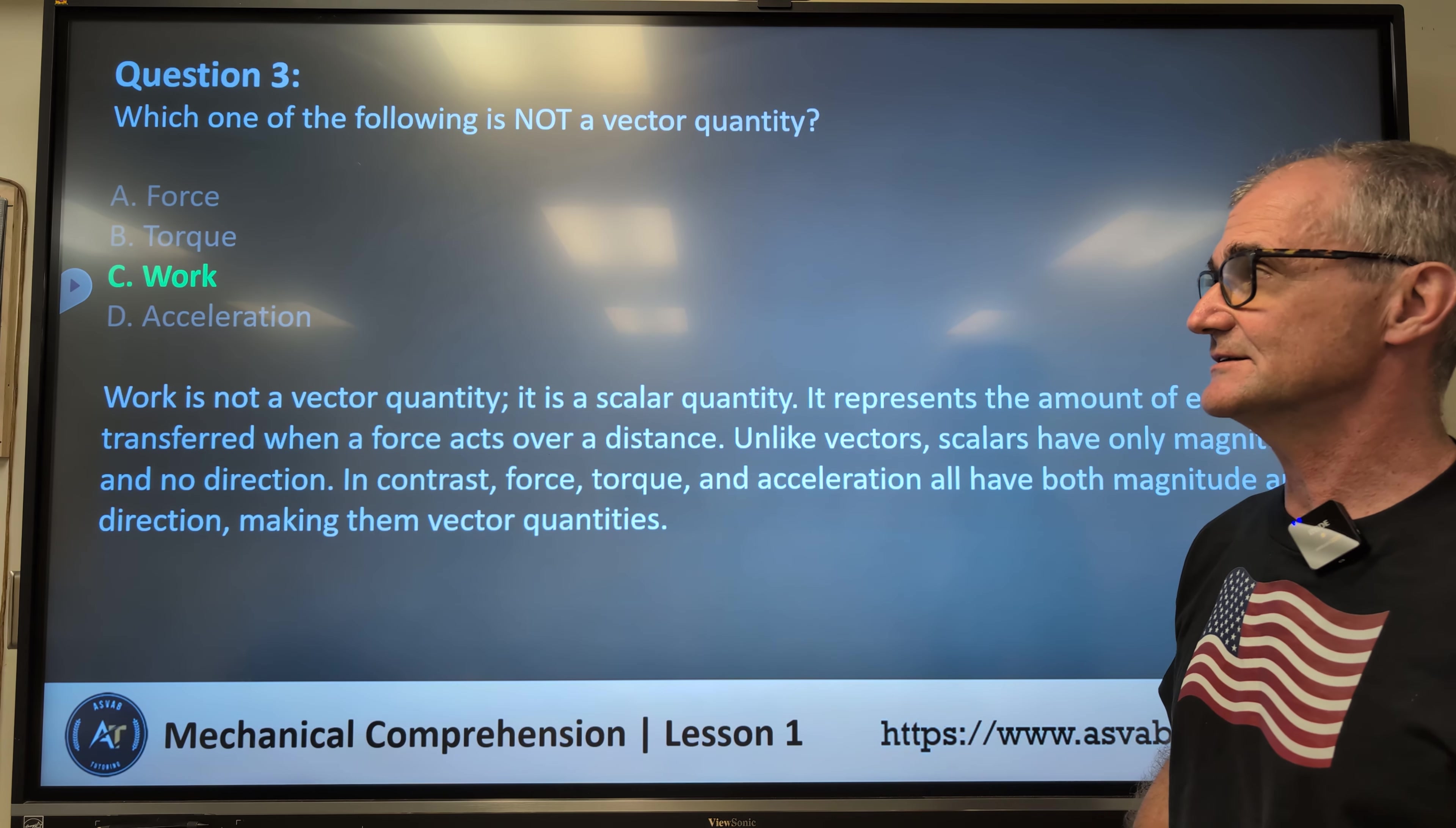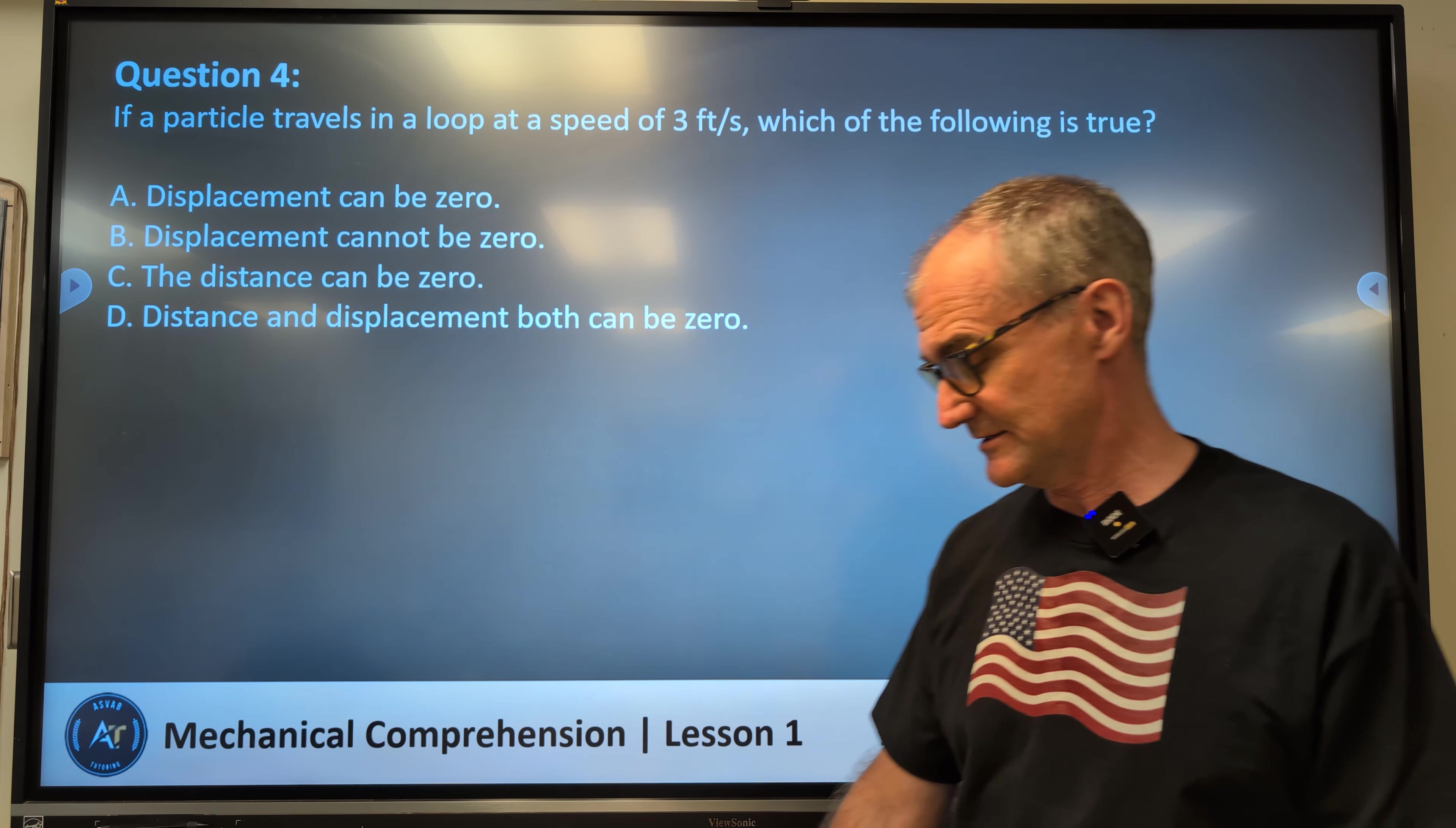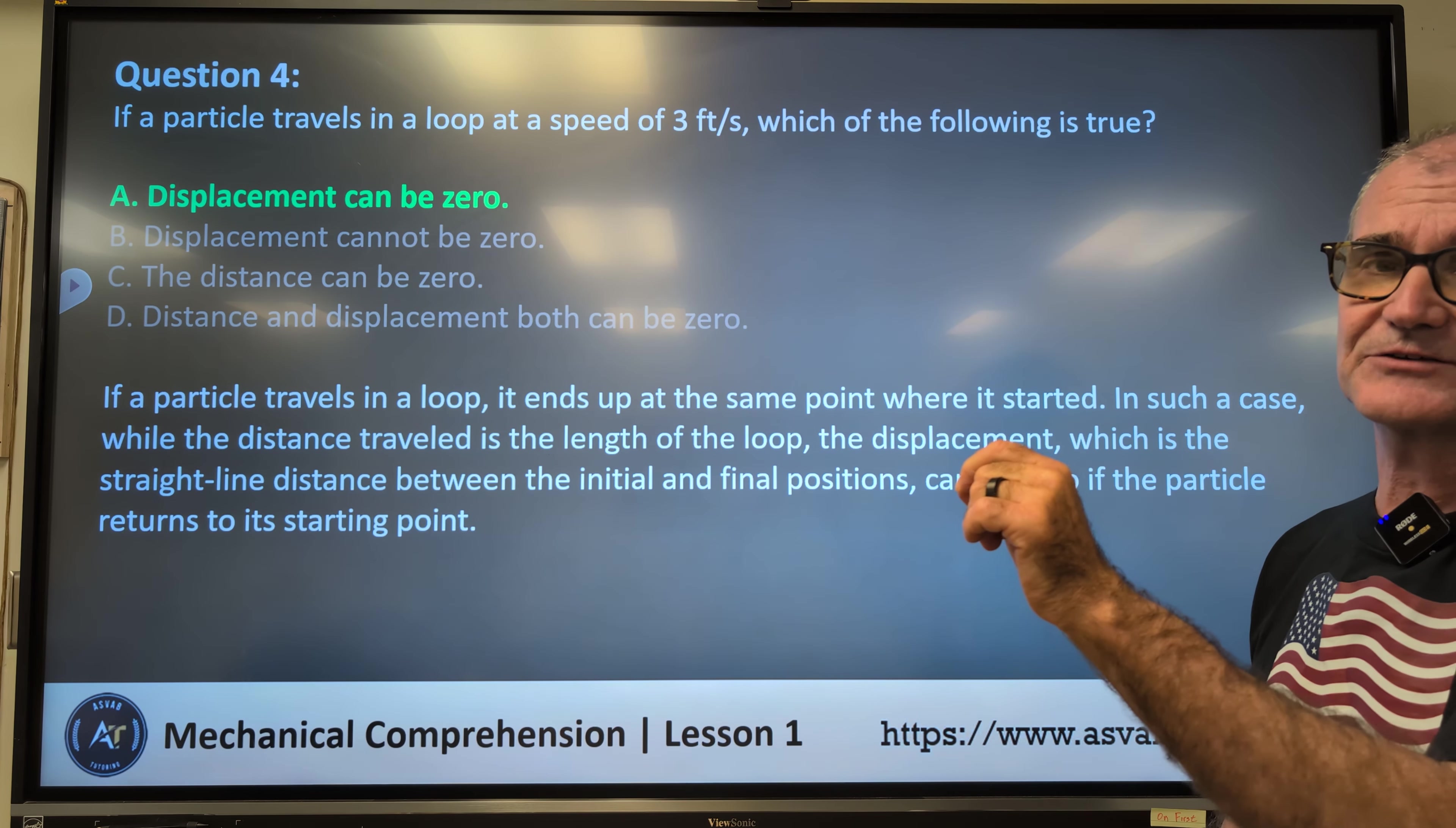If a particle travels in a loop at a speed of three feet per second, which of the following is true? Displacement can be zero, displacement cannot be zero, the distance can be zero, or distance and displacement both can be zero. Correct answer A. Displacement can be zero. If a particle travels in a loop, it ends at the same point where it started. In such a case, the distance traveled is the length of the loop. The displacement is a straight line distance between its start point and its final point, and that's why it can be zero.